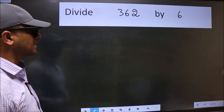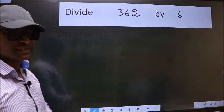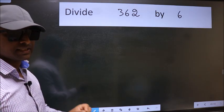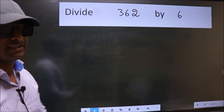Divide 362 by 6. While doing this division, many do this mistake. What is the mistake that they do? I will let you know. But before that, we should frame it in this way.